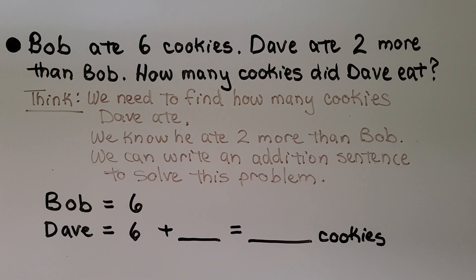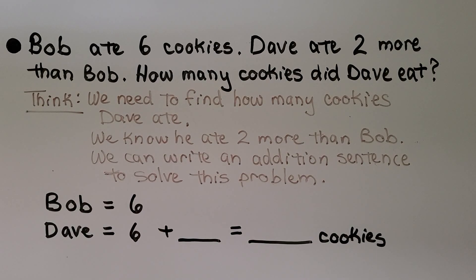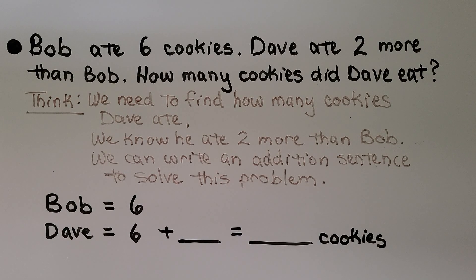Bob ate 6 cookies. Dave ate 2 more than Bob. How many cookies did Dave eat? So we think we need to find how many cookies Dave ate. We know he ate 2 more than Bob.